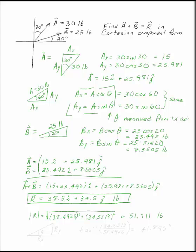And you can find the angle, for example, the angle to the horizontal, by taking RY over RX, and the inverse tangent of that. The inverse tangent of that, which gives you 41.895 degrees from the horizontal.